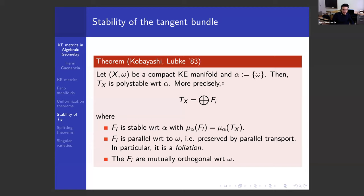This theorem is actually true in a much more general setting. You don't need to assume that X is Kähler-Einstein. Just having a holomorphic bundle that admits a Hermitian-Einstein metric is a sufficient condition. The key here is that whenever you're Kähler-Einstein, then TX is automatically Hermitian-Einstein. Because this result is quite important, I've decided to go through the proof and show you the main steps.